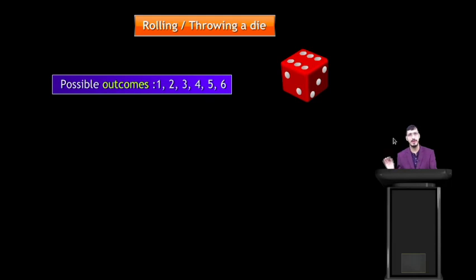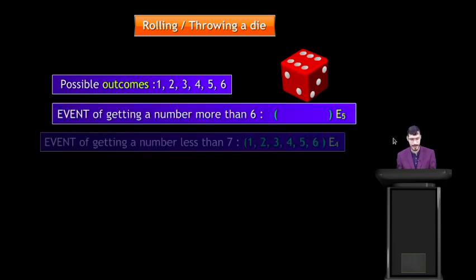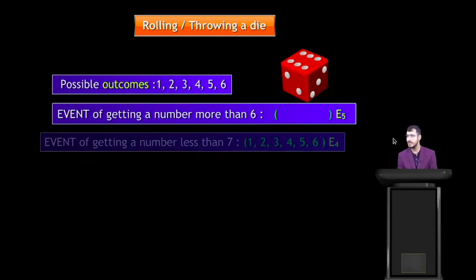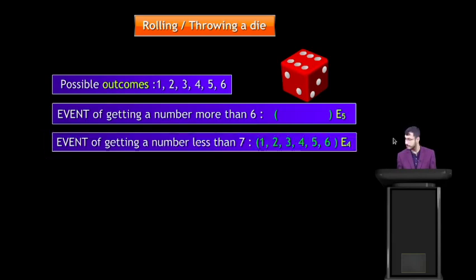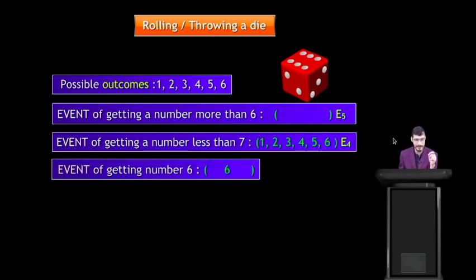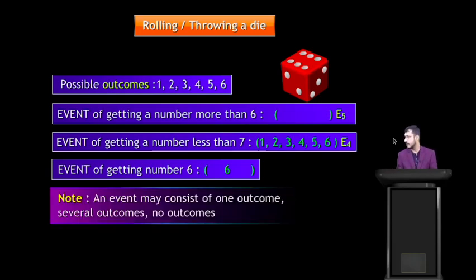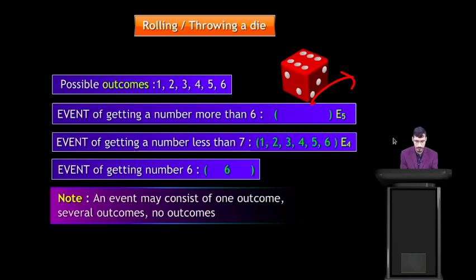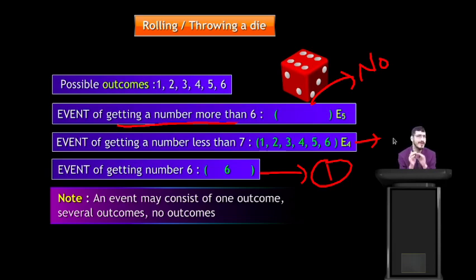When rolling a die with possible outcomes 1, 2, 3, 4, 5, 6: getting a number more than 6 gives no outcomes (impossible event); getting a number less than 7 gives all 6 outcomes; getting number 6 gives only one outcome. So an event may consist of one outcome, several outcomes, or no outcomes.